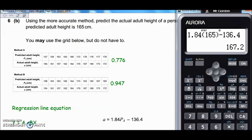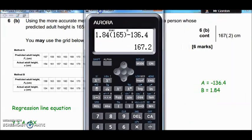So the regression line for method B is predicting that if someone's predicted height is 165, then their actual adult height should be 167.2. And that is there in the mark scheme, so 167.2.